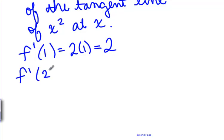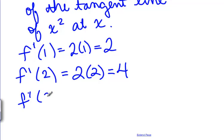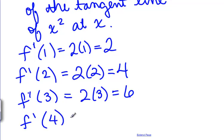But now we can also find f prime of 2, 2 times 2. So if we were to draw a tangent line at 2 we would get a slope of 4. If we were to draw a tangent line at 3 we would get a slope of 2 times 3 which would be 6. And if we were to draw a tangent line at 4 we would get a slope of 2 times 4 which would be 8.